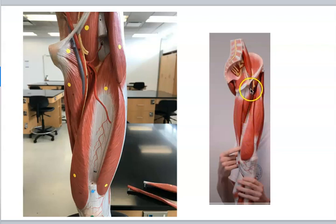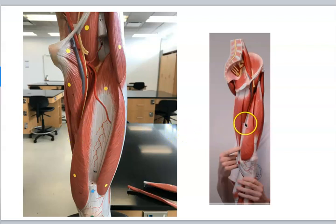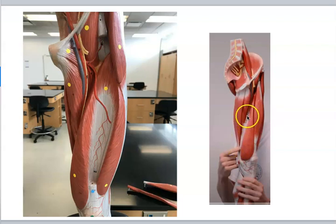Here we can see the femoral artery and femoral vein passing through a white structure — this is the adductor hiatus, an opening in the adductor magnus that allows the femoral artery and vein to travel to the back side of the knee.